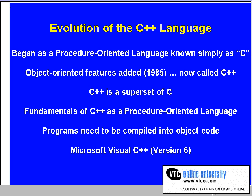To create and execute a C program, you need to have access to a text editor, often simply called an editor, and a C compiler. You use the editor to enter the C instructions called source code. After entering the source code, you then use the C compiler to convert the source code into machine code. Machine code is what the computer can understand, and is often referred to as object code.